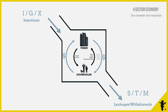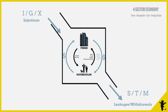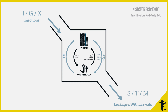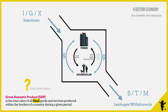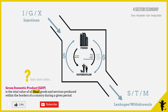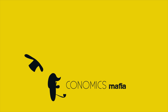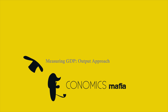It tells us roughly how an economy functions. How do we measure the size of an economy then? By measuring Gross Domestic Product, or GDP. GDP is the total value of all final goods and services produced within the borders of a country during a given period. If you like this video, remember to like and subscribe. Next up: Measuring GDP — the output approach.